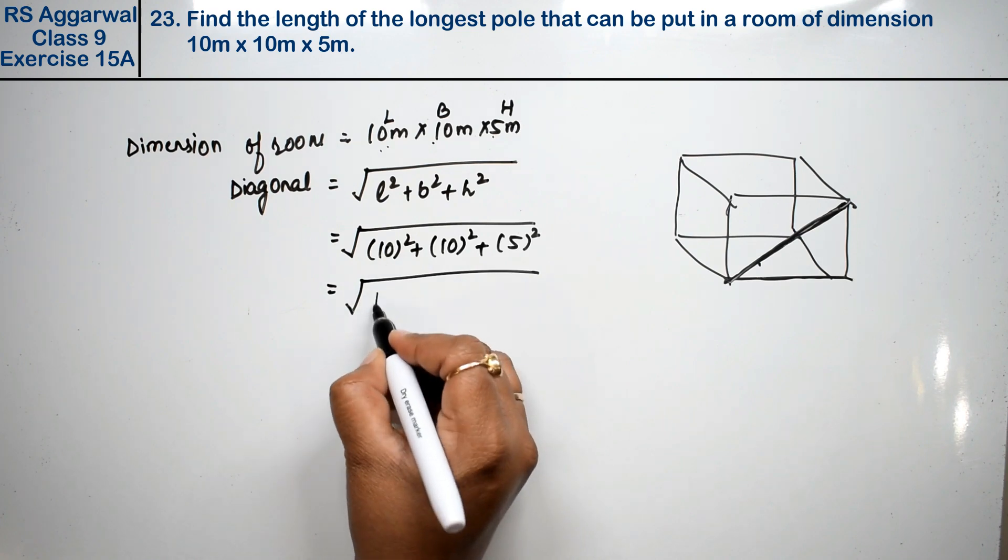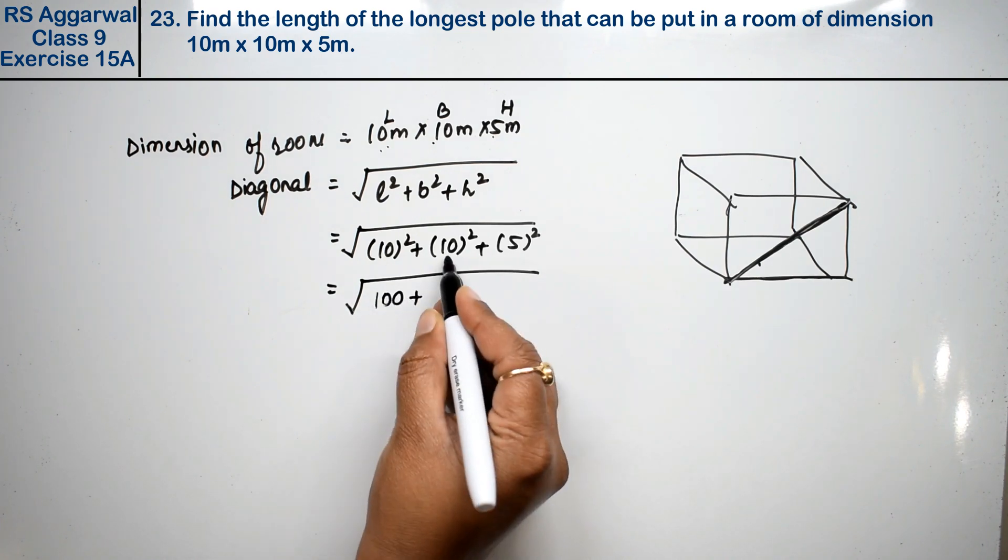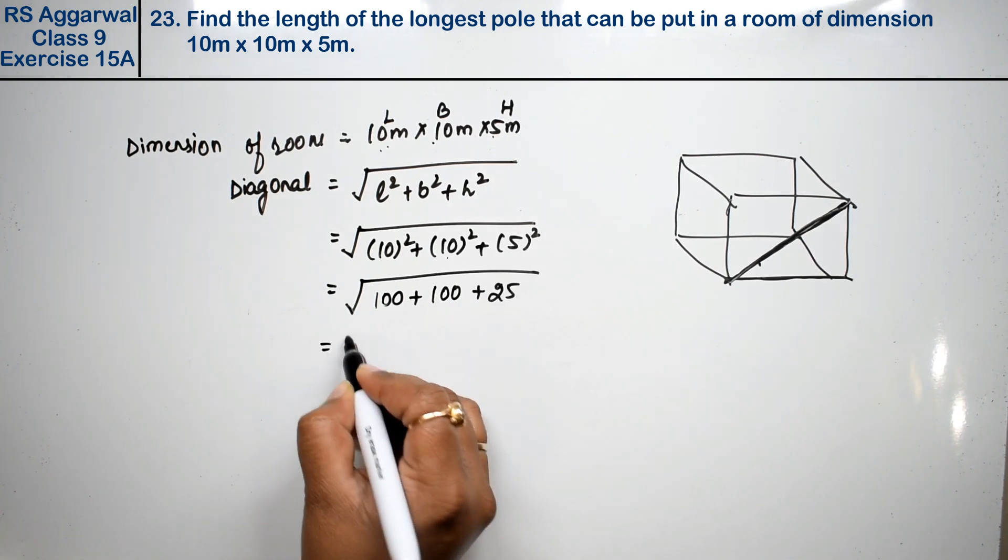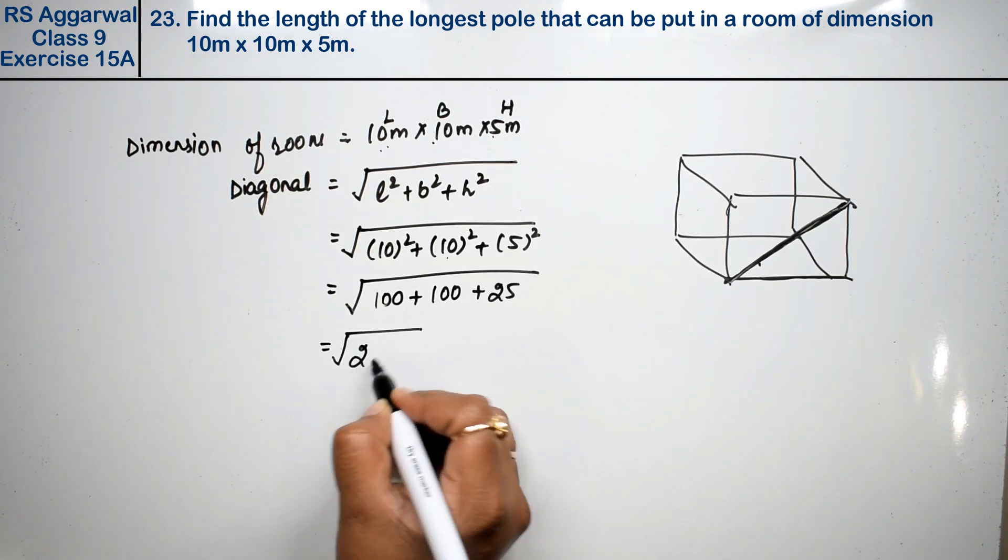What is 10 square? 100. 10 square is 100. 5 square is 25. If you add the three, then it is 225. Square root.